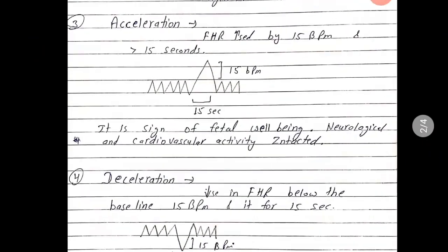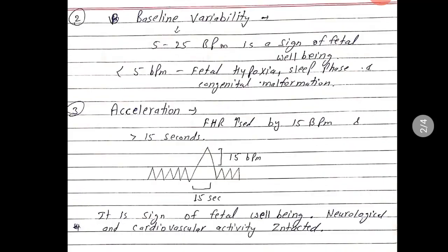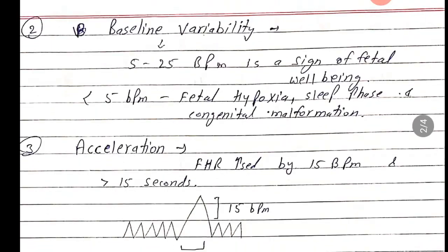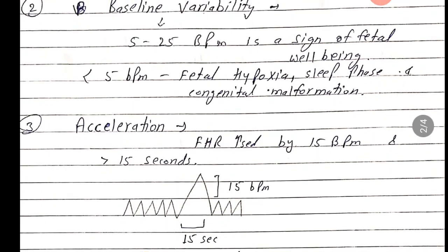Next, let's see what baseline variability is. Baseline variability of 5 to 25 beats per minute is a sign of fetal well-being. A variability of 5 to 25 bpm in the baseline fetal heart rate indicates fetal well-being.